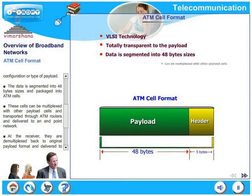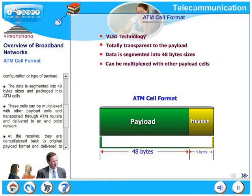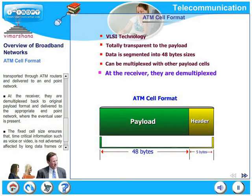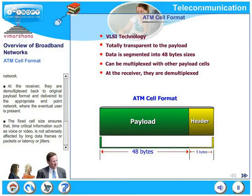These cells can be multiplexed with other payload cells and transported through ATM routers and delivered to an endpoint network. At the receiver, they are demultiplexed back to the original payload format and delivered to the appropriate endpoint network where the eventual user is present. The fixed cell size ensures that time-critical information such as voice or video is not adversely affected by long data frames, packets, latency, or jitter.